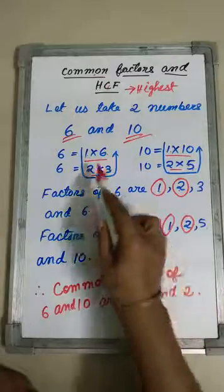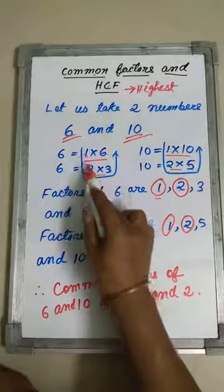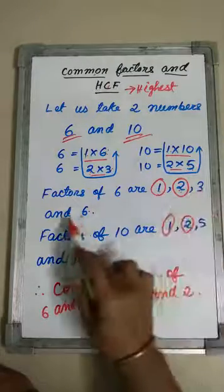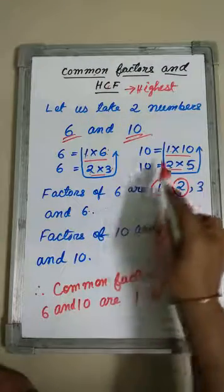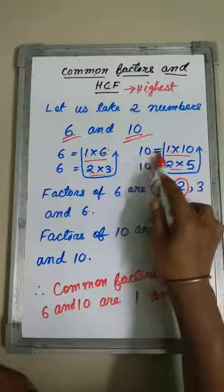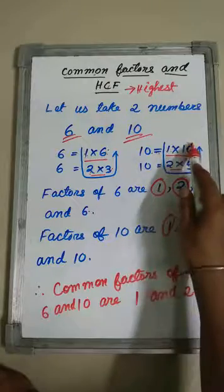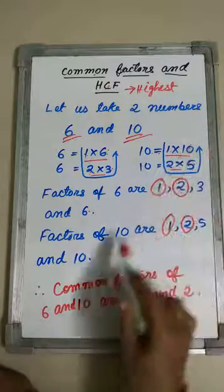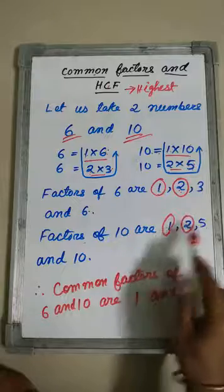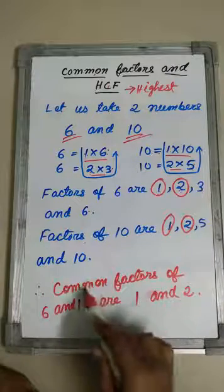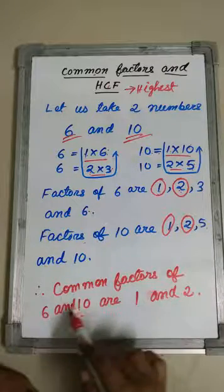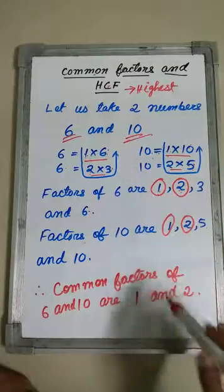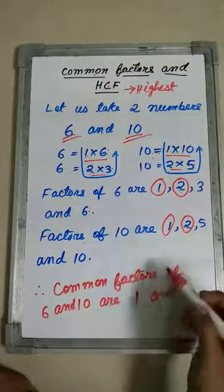Factors of 6 are 1, 2, 3 and 6. Factors of 10 are 1, 2, 5 and 10. So, common factors of 6 and 10 — what are the common factors of 6 and 10?